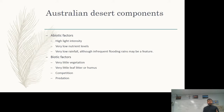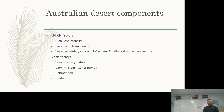In the Australian desert, abiotic components include very high light intensity, extraordinarily low nutrient levels, and very low rainfall — though infrequent flooding rains can occur, especially in the Northern Territory and Northern Western Australia. The biotic factors include extraordinarily small amounts of vegetation, very little leaf litter or humus relating to those low nutrient levels, a lot of competition because resources are scarce, and predation. Predation and competition are consistent biotic factors across ecosystems.